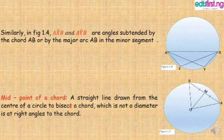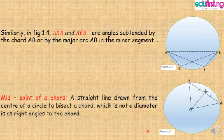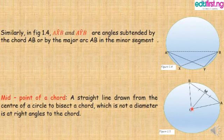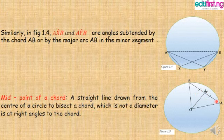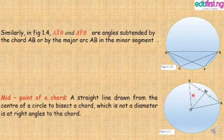Midpoint of a chord. A straight line drawn from the center of a circle to bisect a chord, which is not a diameter, is at right angle to the chord. This is a straight line; this is center O, the center of the circle. This line is drawn from the center of the circle to bisect chord AB into two equal halves. Since this line bisects the chord from the center, it creates right angles on both sides.